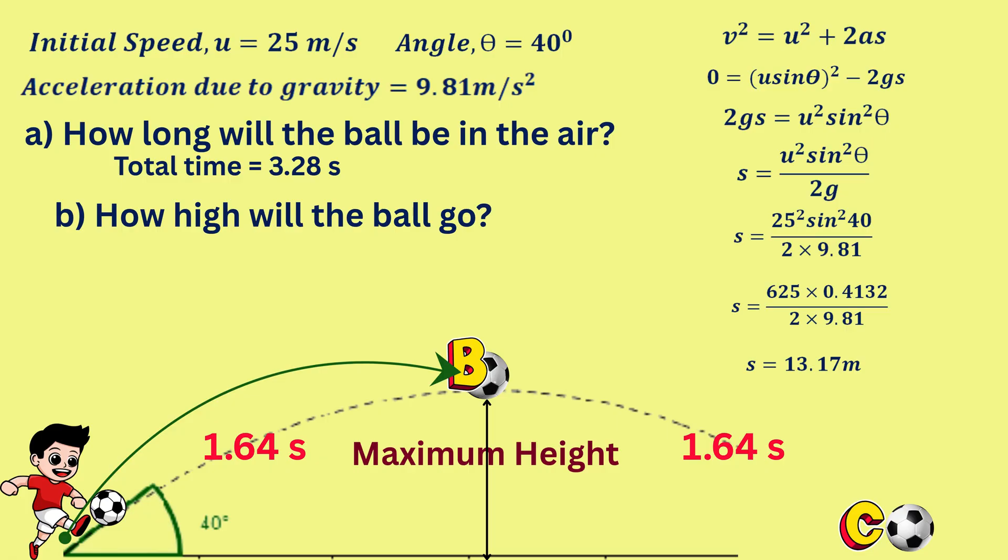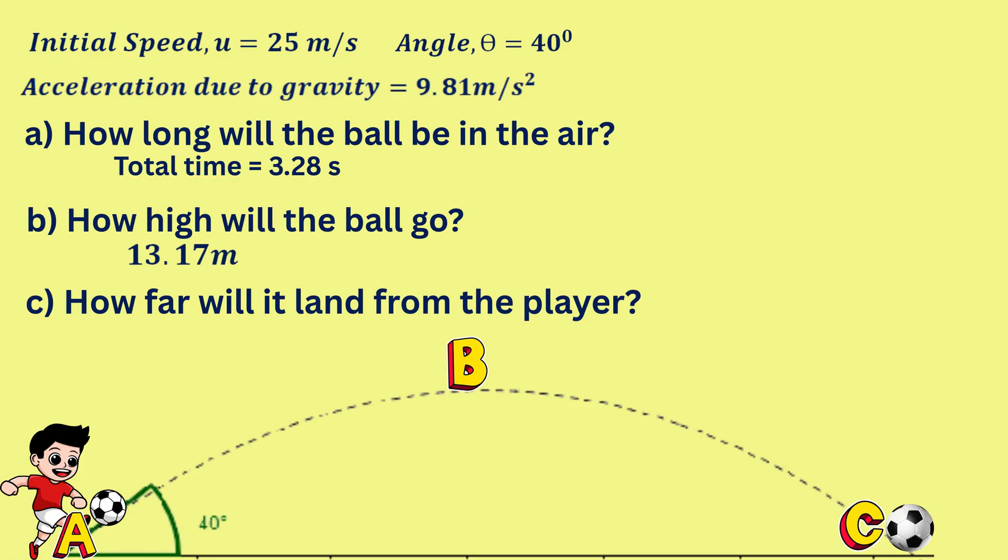So the maximum height reached by the ball is 13.17 meters. To calculate how far the ball will land from the player is same as calculating the horizontal displacement or range of the projectile motion.